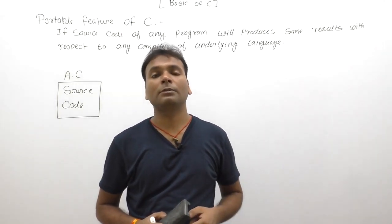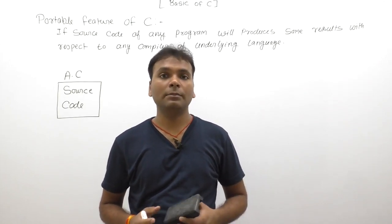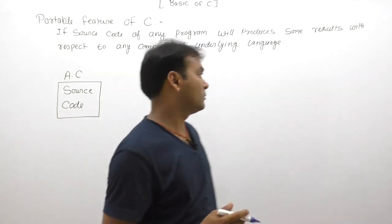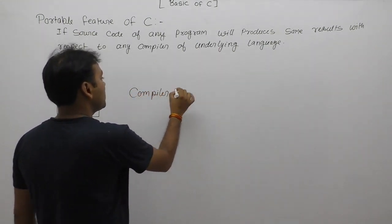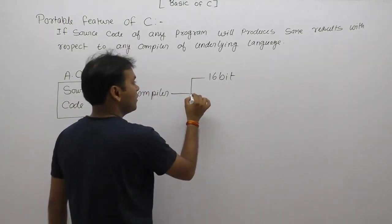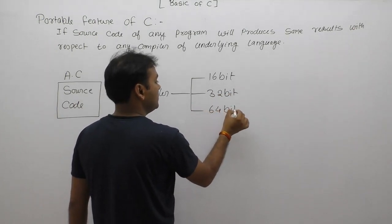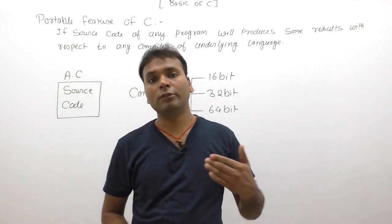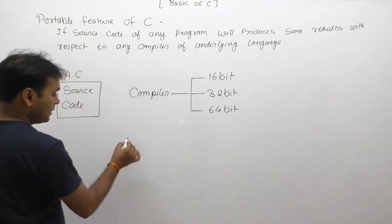Portable features are directly related to compilers. As we know, any programming language can have three types of compilers: 16-bit compilers, 32-bit compilers, or 64-bit compilers. Not only compilers — every software may have three different flavors in the form of 16-bit, 32-bit, or 64-bit formats.